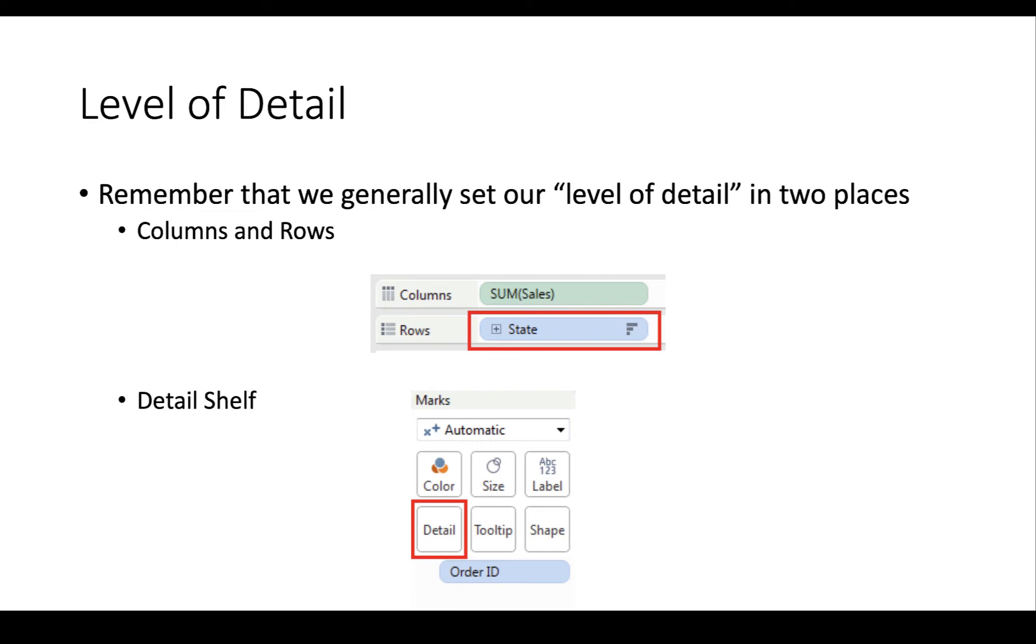Now, sometimes we want to express or visualize a different level of detail than we actually want to show. So we might want to, instead of breaking something down by country, state and city, we might want to break it down by country and city or country and state and city. And we can't do that just by dragging and dropping fields onto the builder screen.